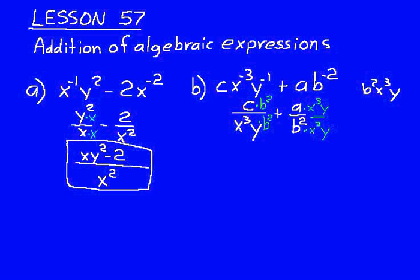Now we can add the numerators together. Let's write our denominator down here: b^2x^3y. And then our numerator, that will be b^2c + ax^3y.